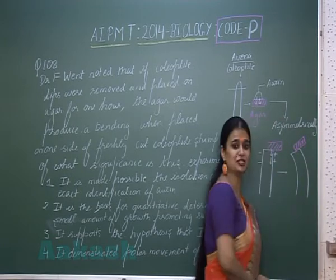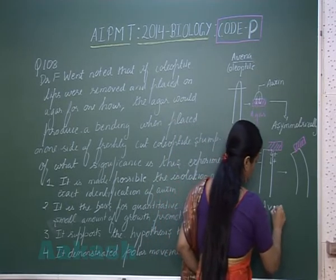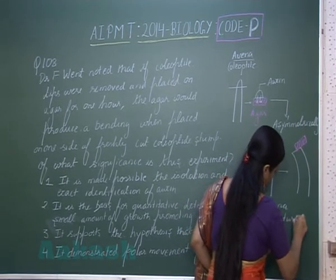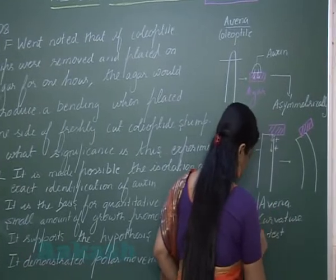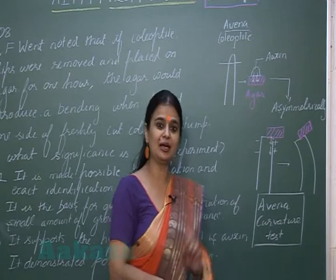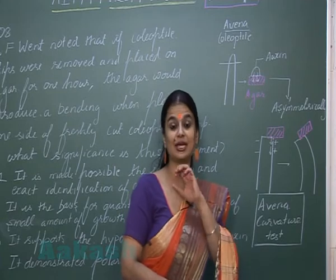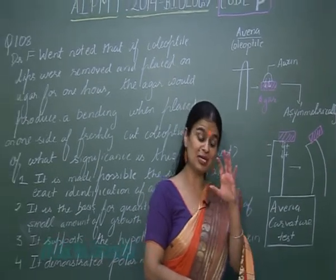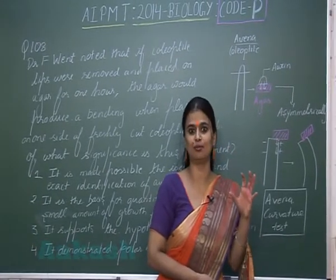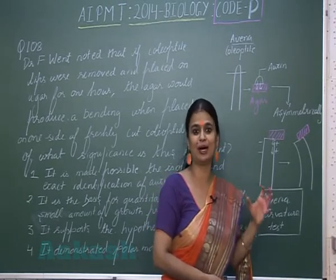Curvature in the Coleoptile was observed, and this is known as the Avena curvature test. Curvature in Avena can only be caused by auxin. So this test tells the identity of the chemical compound — the identity of auxin is represented by this bio-assay.